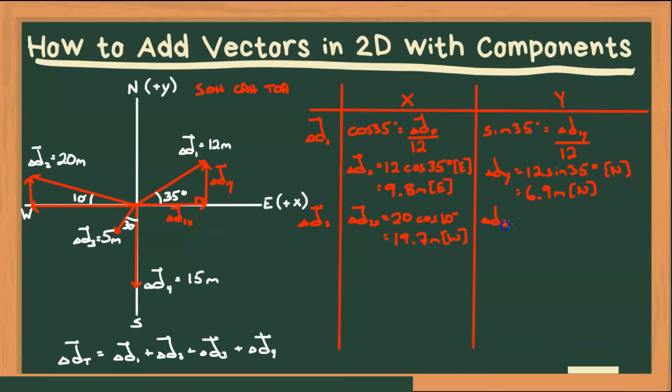So let's solve for delta D2Y. And delta D2Y is going to be 20 sine 10 degrees. And it is directed north. Which gives us a value of 3.5 meters north.